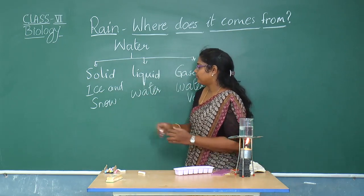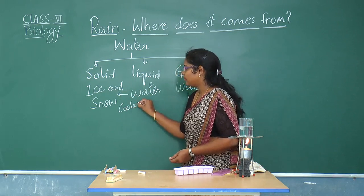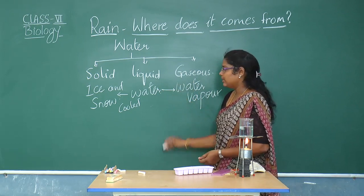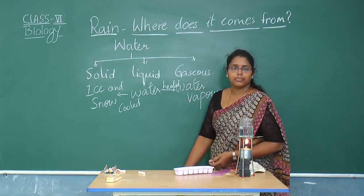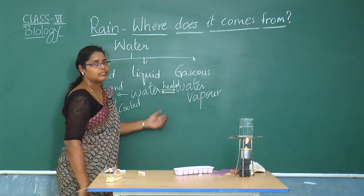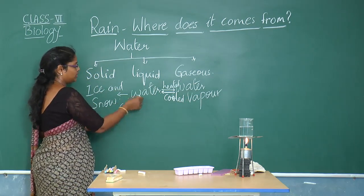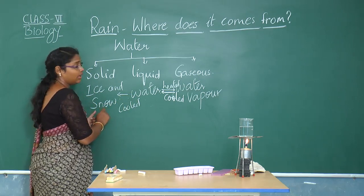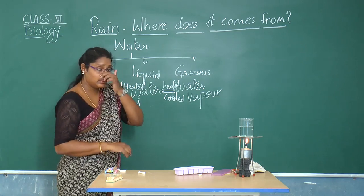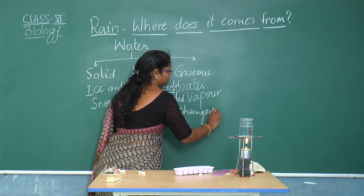Water in the liquid form will be converted into ice when it is cooled. Water in the liquid form when heated gets converted into water vapor. When water vapor is cooled it converts back into water, and when ice is heated it converts into water. These are interchangeable reactions.